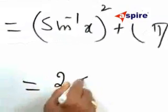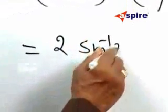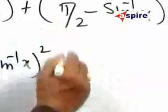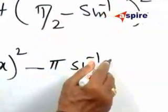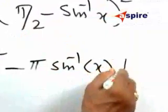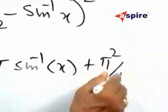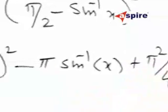Now this is equal to 2 sin inverse of x the whole square. Here one I get, here another one I get. Then minus 2ab, that is π sin inverse of x, plus this square π squared by 4. This is my y.